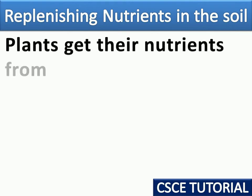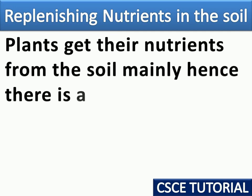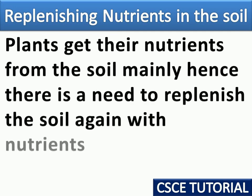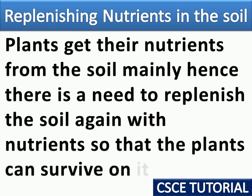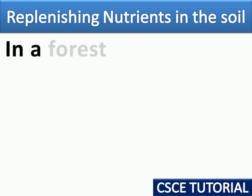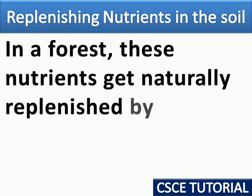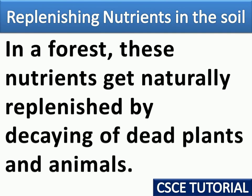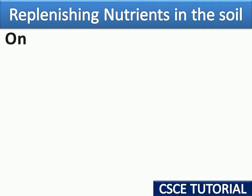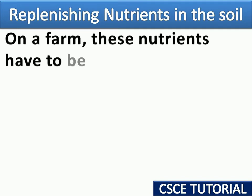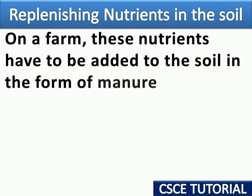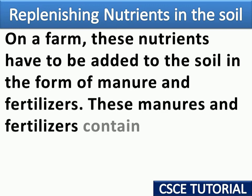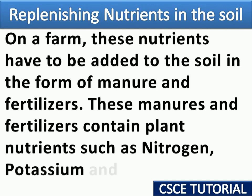Replenishing nutrients in the soil: plants get their nutrients mainly from the soil. Hence there is a need to replenish the soil with nutrients so that plants can survive on it. In a forest, these nutrients get naturally replenished by decaying plants and animals. On a farm, these nutrients have to be added to the soil in the form of manure and fertilizers, which contain nutrients such as nitrogen, potassium, and phosphorus.